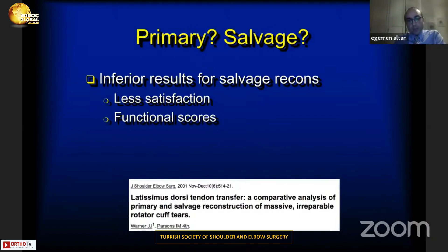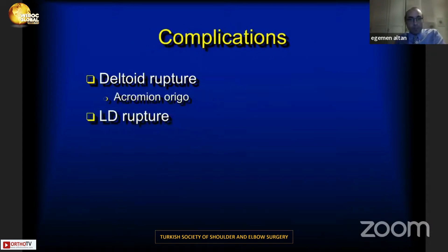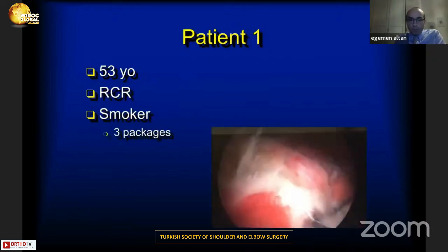Warner addressed whether to perform primary surgery or a salvage tendon transfer. Salvage reconstruction yields inferior results compared to primary surgery, with lower satisfaction and functional scores. Possible complications include deltoid rupture and latissimus dorsi re-rupture.